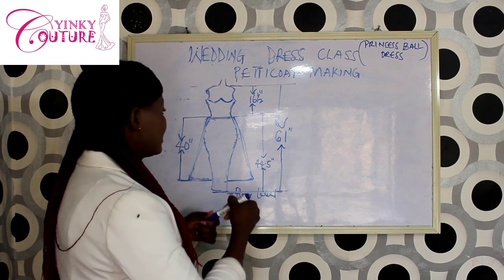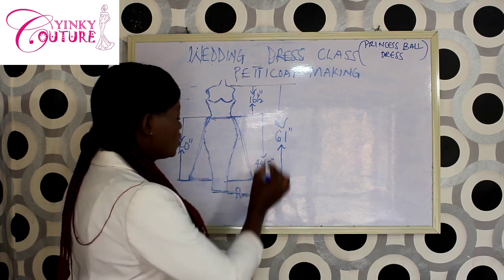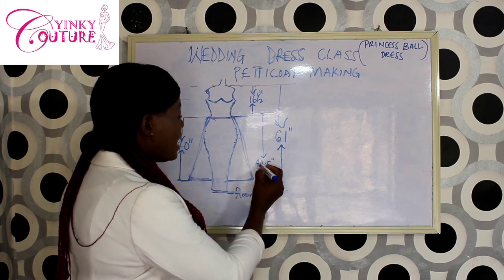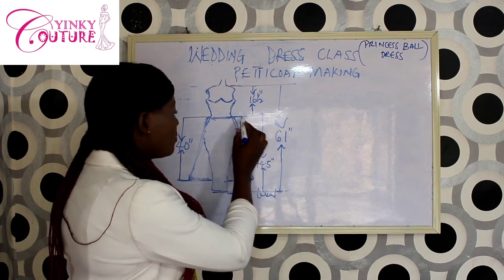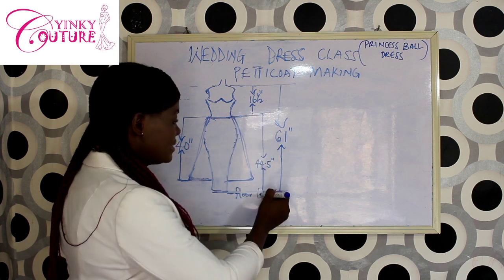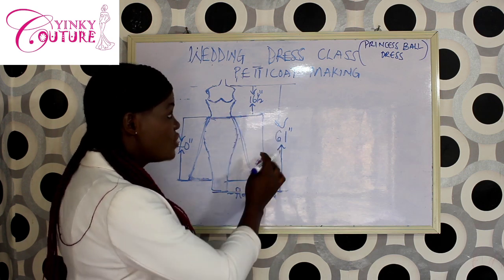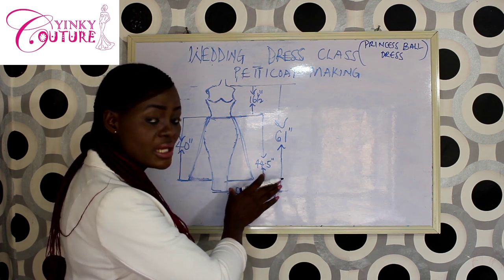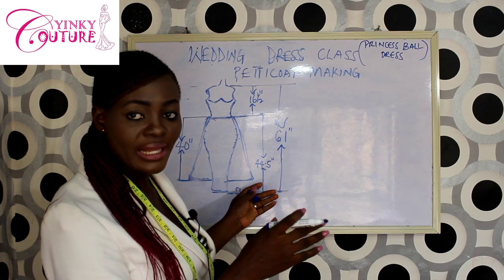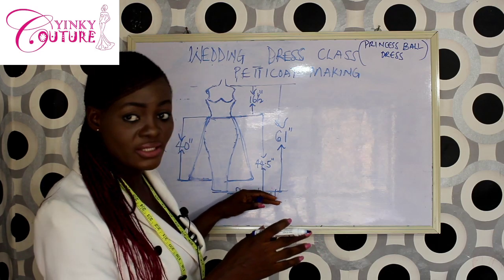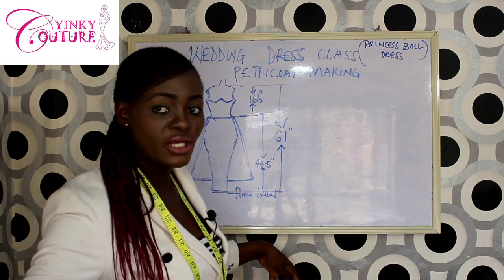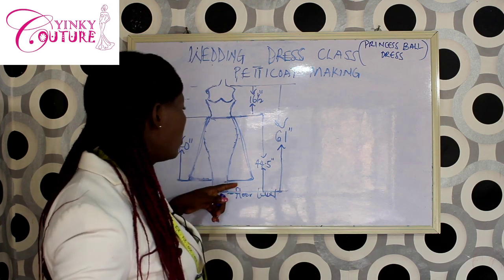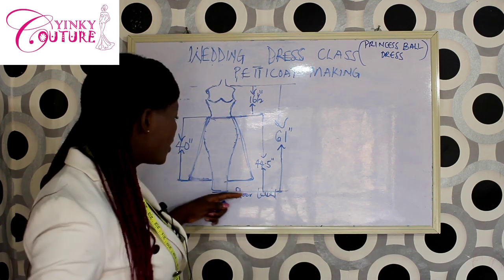So having gotten that, for the skirt, from the waist to the floor level, I subtracted 16 and a half from 61, and I have 44.5 inches. So 44.5 will now be the skirt length. When we are making the skirt, that's the measurement we are going to use, but we are still going to add a sewing allowance to it. We'll add an allowance of six inches to it so that it will be fine.